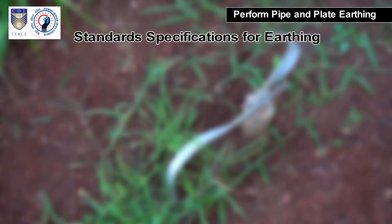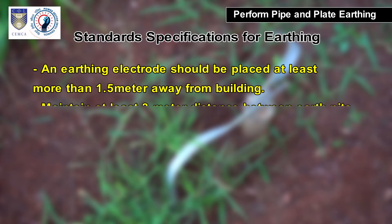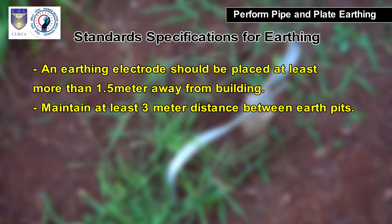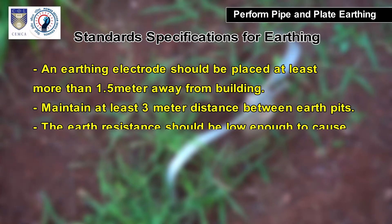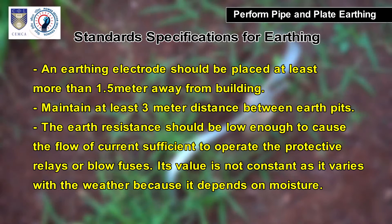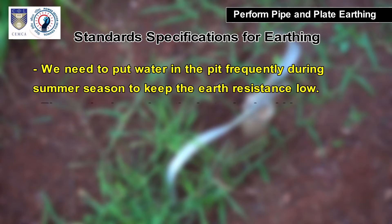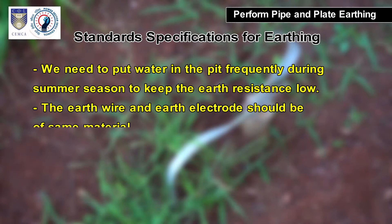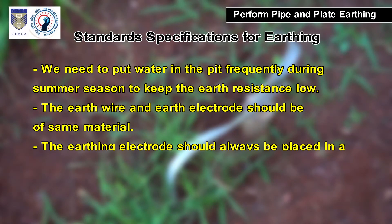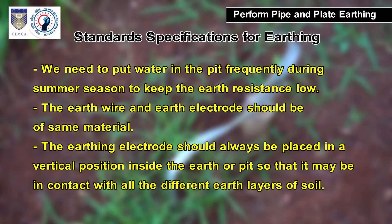Standards and specifications for earthing: An earthing electrode should be placed at least 1.5 meters away from a building. Maintain at least 3 meters distance between earth pits. Earth resistance should be low enough to cause sufficient current flow to operate protective relays or blow fuses. Its value varies with weather because it depends on moisture. Water should be put in the pit frequently during summer to keep earth resistance low. The earth wire and earth electrode should be of the same material. The earthing electrode should always be placed vertically inside the earth so it is in contact with all different soil layers.